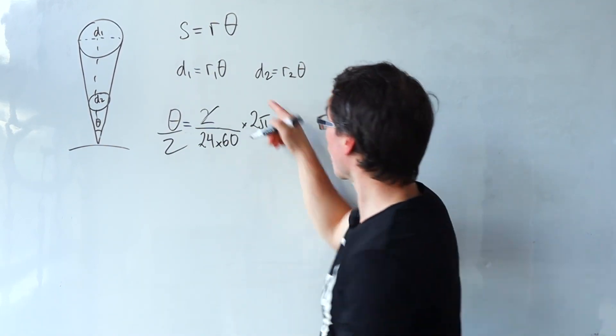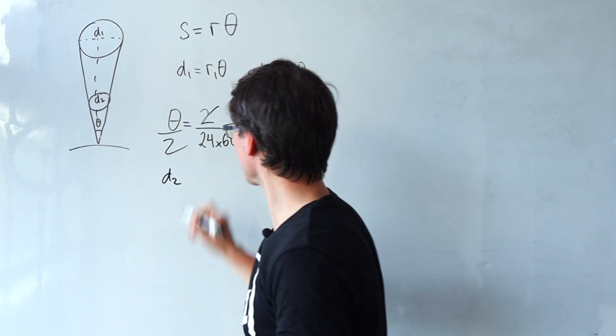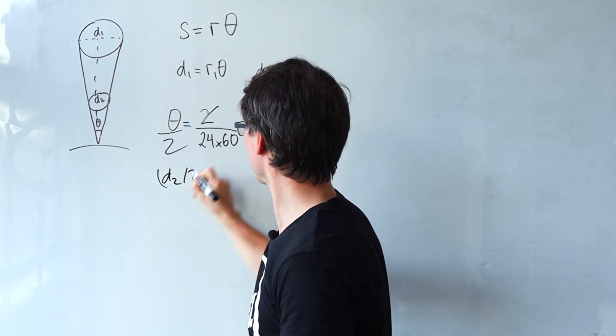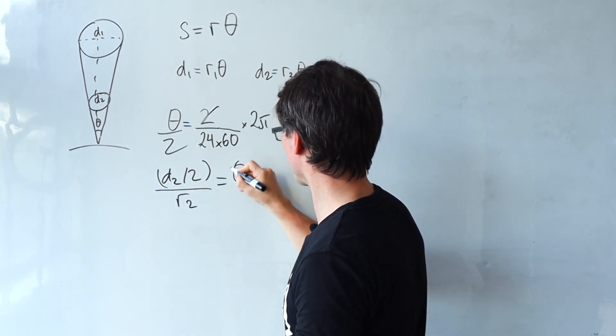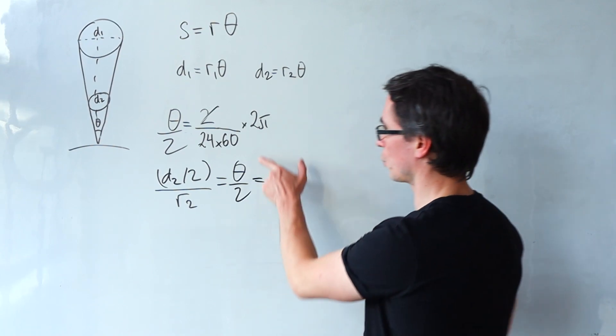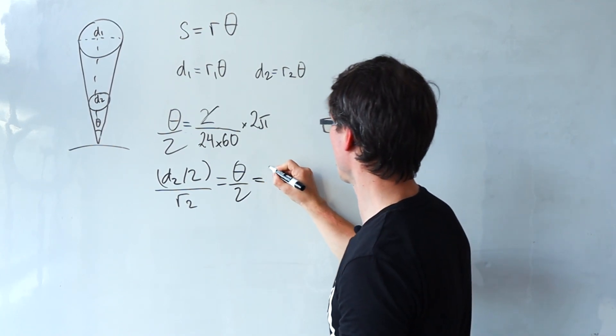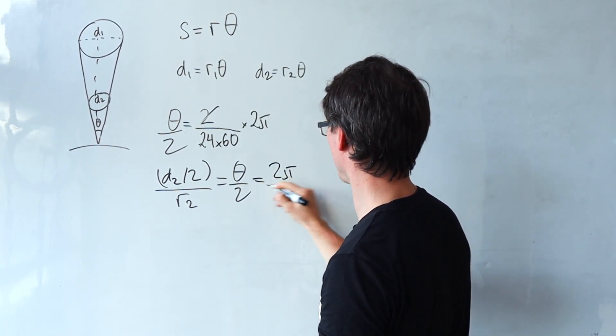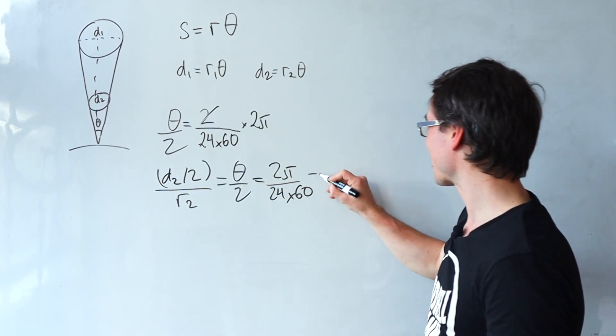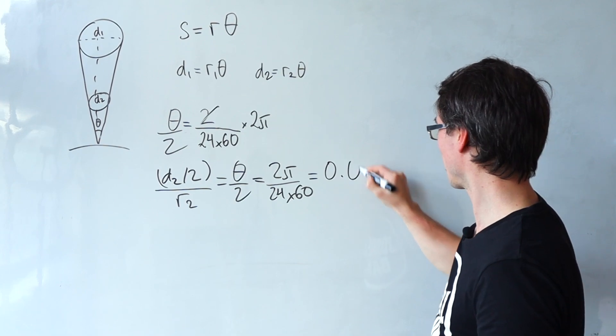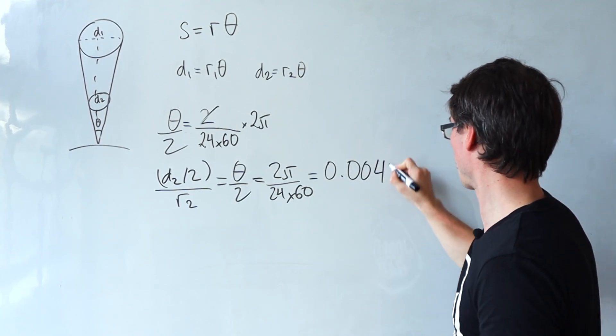So the moon's orbital radius d2 divided by 2 divided by its orbital distance which is r2 is just equal to theta over 2 which is just this expression here which is going to be 2 pi over 24 times 60. Which if we plug into a calculator we're going to get about 0.0044.